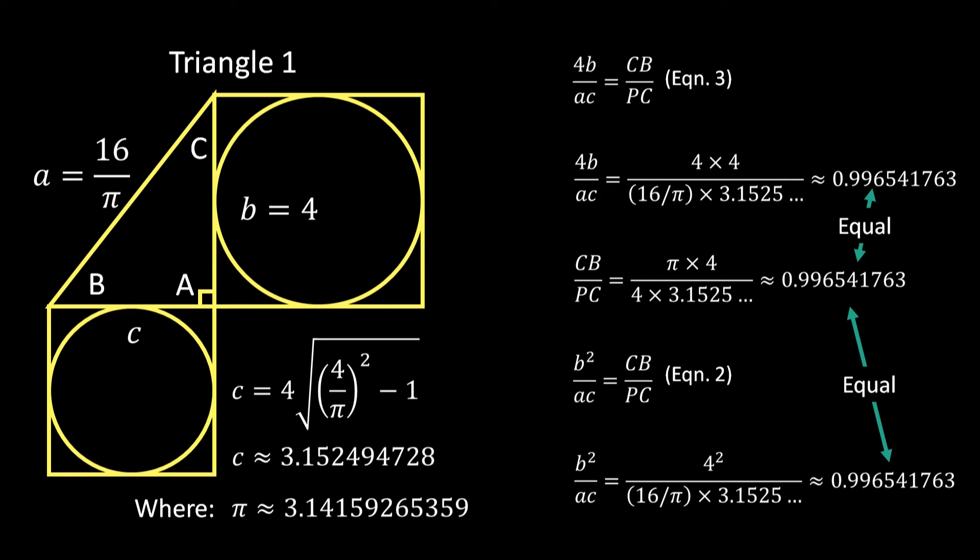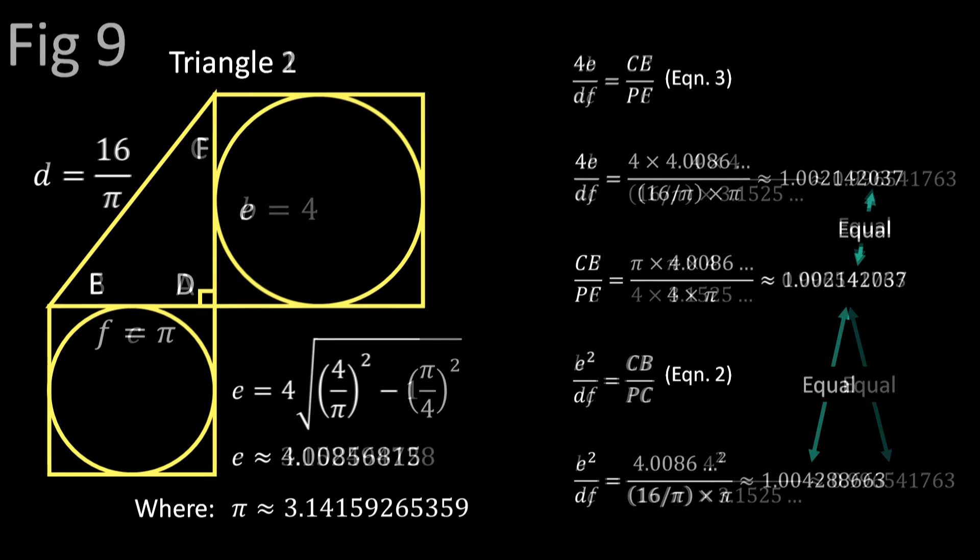How about that? Actually, truth be known, both equations are balanced for π equal to any positive number less than 4, which includes the real value of π and also Wolham's new π. I'll leave it as an exercise for the casual student to show why that is. But since Equation 3 is valid for any triangle with a hypotenuse of 16/π, then it's balanced over the same range of π when applied to Triangle 2.